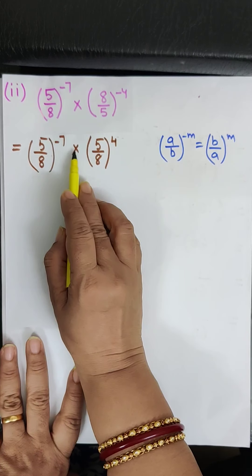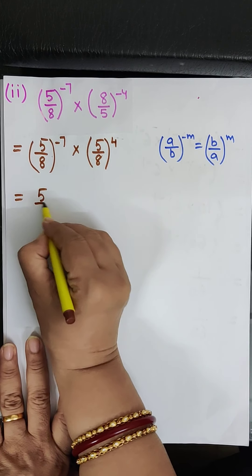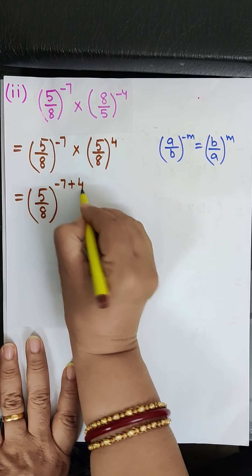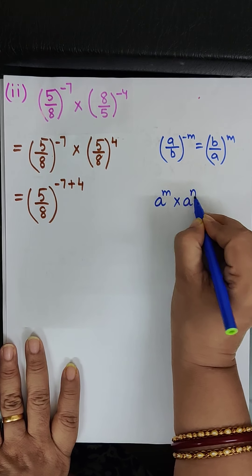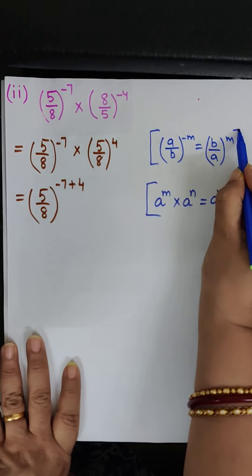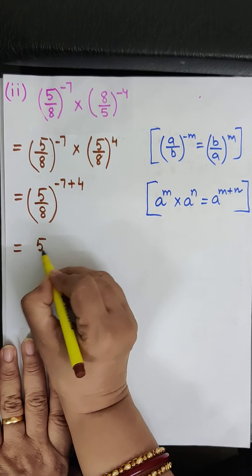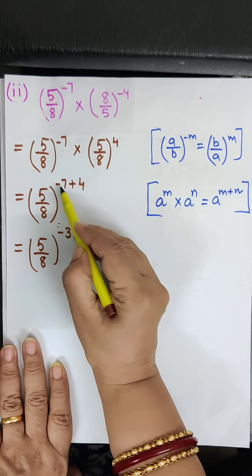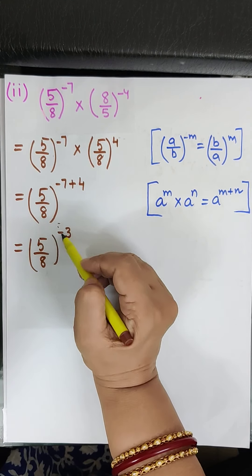Now bases are the same with multiplication in between, so powers will be added. We write 5 upon 8, to the power minus 7 plus 4. We used the law: a to the power m multiplied by a to the power n equals a to the power m plus n. So this gives 5 upon 8 raised to the power minus 3, because opposite signs: subtract 4 from 7 gives 3, and the bigger number 7 has the minus sign.